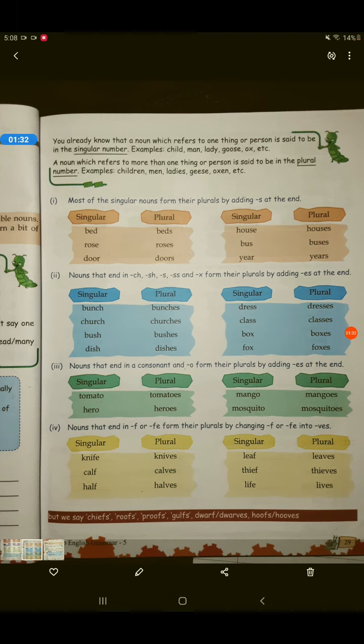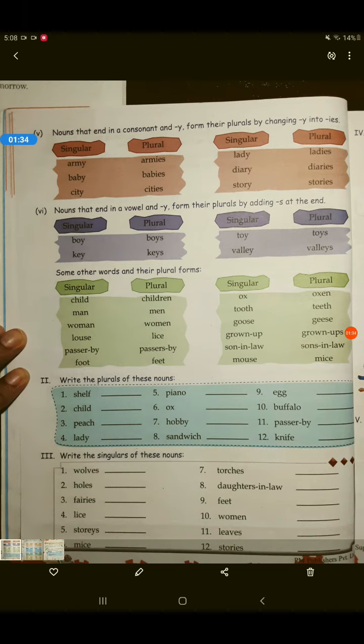Okay, let's see the next page now. These are all types where, these are all ways with which you can make a plural. Alright, children. So, you have to remember all of these and while making plurals and while making sentences, you can imply all of these to make your sentences better.